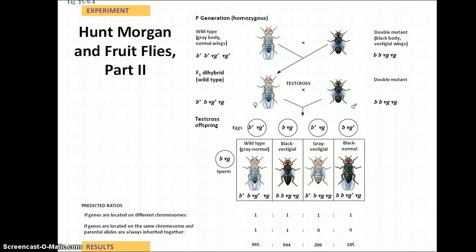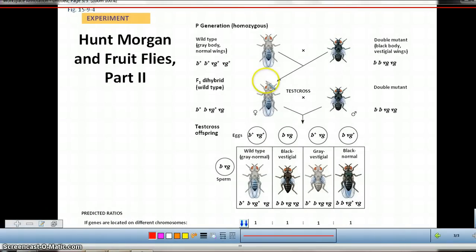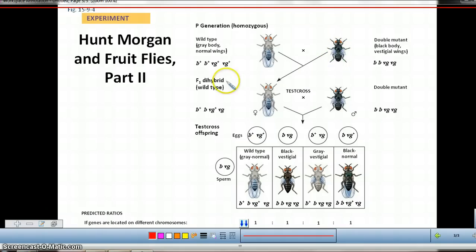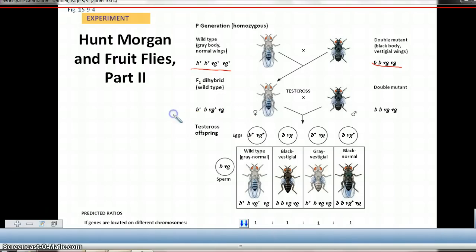Morgan saw this in his tests with fruit flies. He crossed flies that were wild type for body color — gray body — and normal wing length, against doubly mutant flies that had black body color and vestigial (reduced) wings. In the cross between these homozygous individuals, they created F1 offspring that were heterozygous for these two genes. Since they were heterozygous, they still had the wild type phenotype.